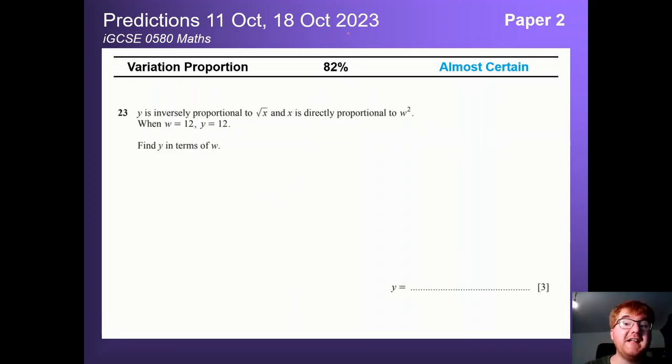Variation and proportion at 82%. Again it's very high. Tends to come at the end of a paper and can be more complicated than you think on first sight. For example this question 23 I found here was inversely proportional to root of x, and then you've got a proportionality between x and another variable. So this is the way they can make the question slightly harder. This has always been popular and it's stayed popular for the June 2023 exams.